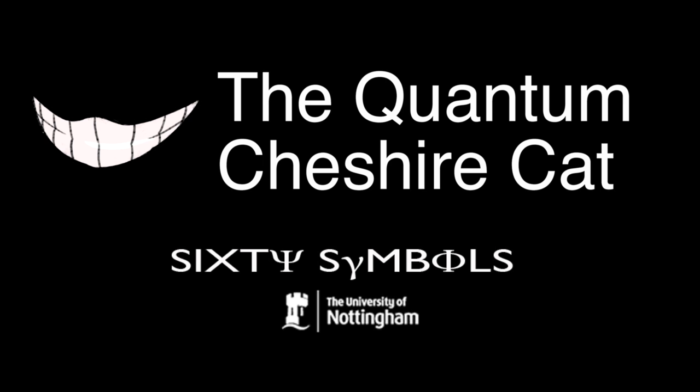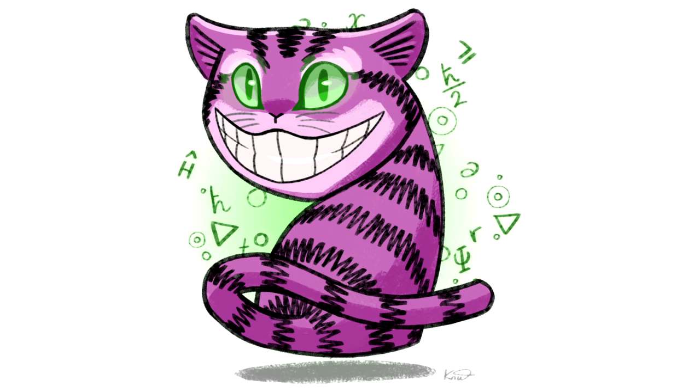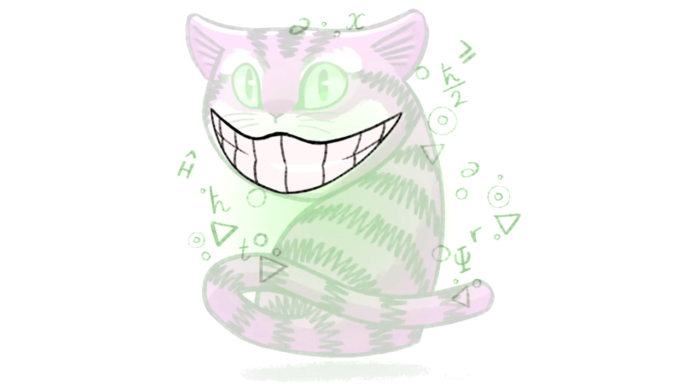Cheshire Cat is a character from Alice in Wonderland, and this cat is famous for the fact that when it grins, the cat disappears, but the grin stays behind. Well, I've often seen a cat without a grin, thought Alice, but a grin without a cat? It's the most curious thing I ever saw in all my life.